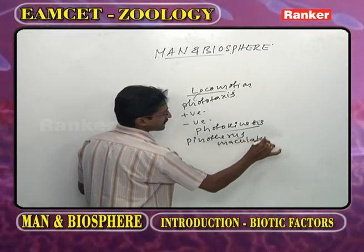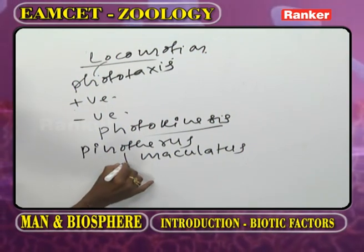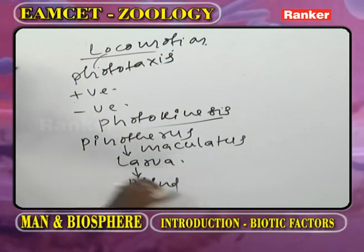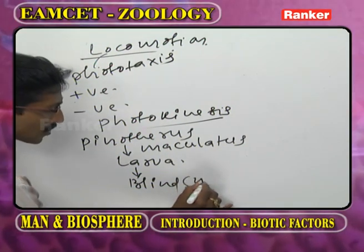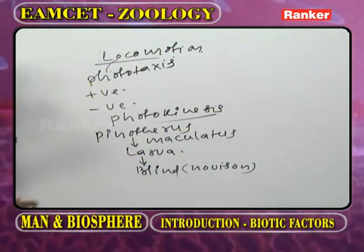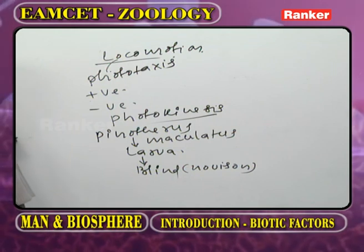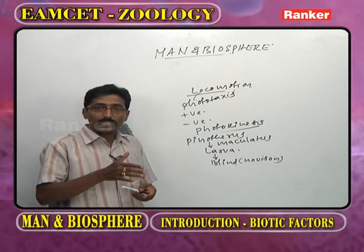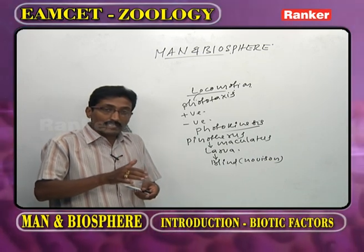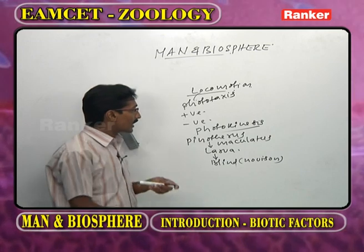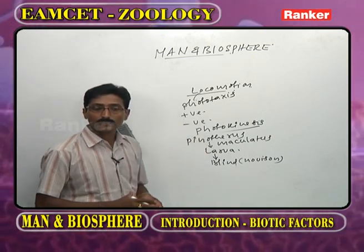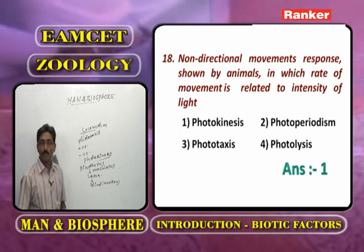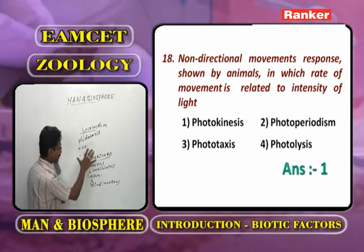In the life history of Pinoteras matulatus, the larva is blind - there is no vision. Though the larva is blind, depending upon the intensity of light, its speed of locomotion increases. This is called photokinesis. Non-directional movement where rate of movement is related to intensity of light is thus photokinesis.